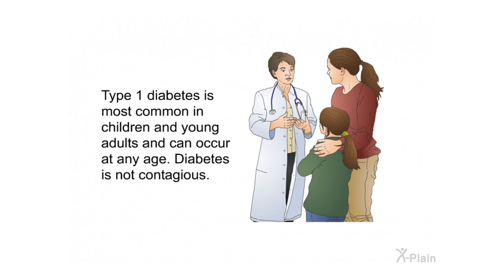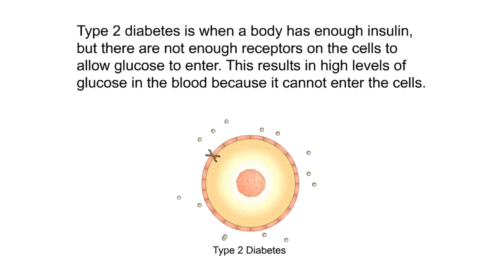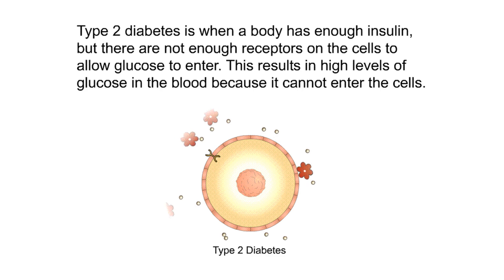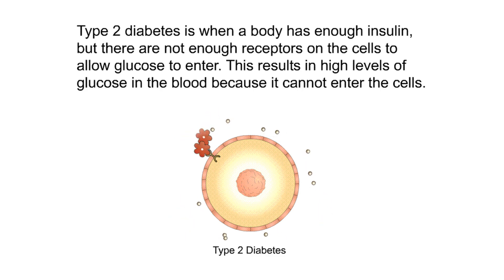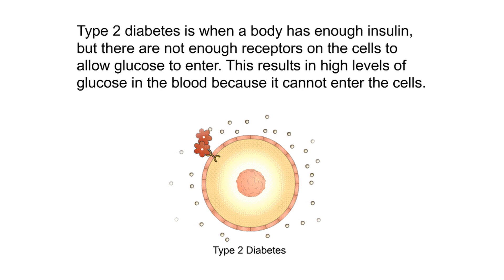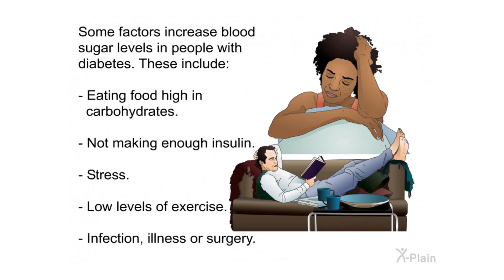Type 2 diabetes is when the body has enough insulin, but there are not enough receptors on the cells to allow glucose to enter. This results in high levels of glucose in the blood because it cannot enter the cells.